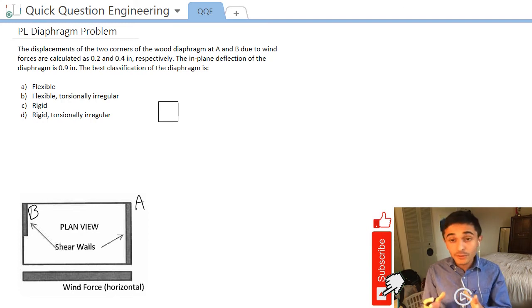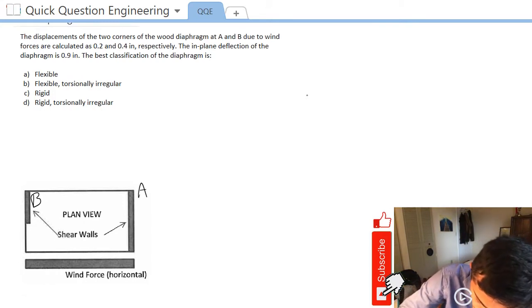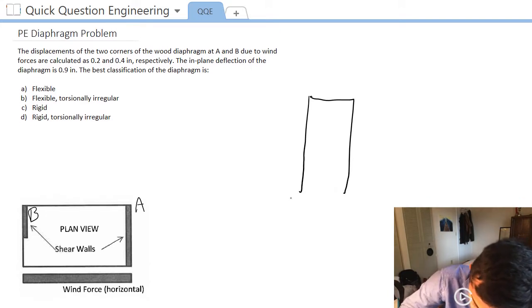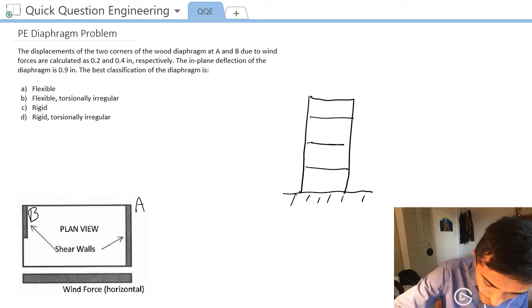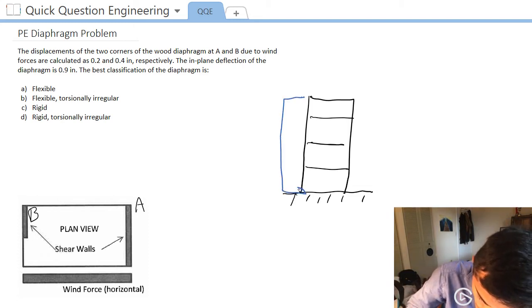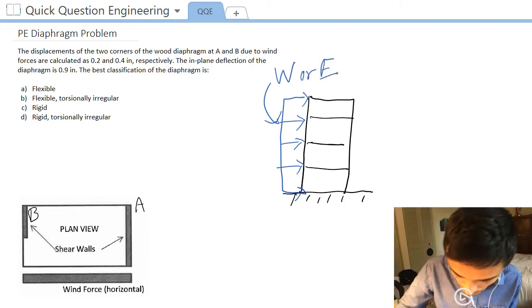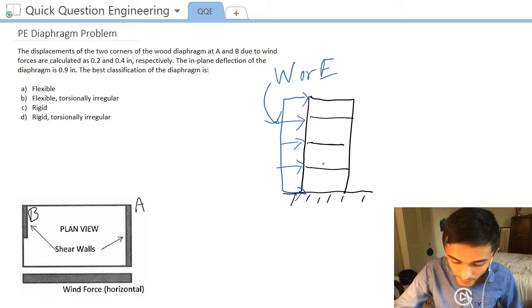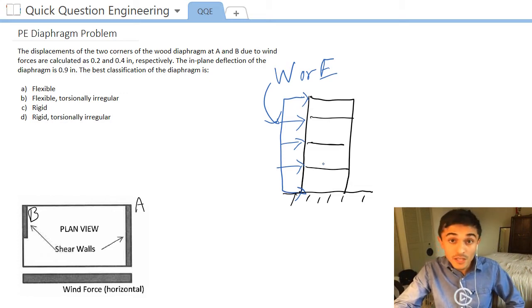So before we even get to our problem let's understand what a diaphragm is. If we have a building, whether it's in a seismic zone or not, this building, let's say you have foundation and then we have many floors here. This building will be subjected to wind loads or earthquake loads, some sort of lateral load. Let's say that this load is wind or seismic. And a diaphragm is just the floors of the building and the floors are called diaphragms when they transfer these lateral loads into the main wind force resisting system of the building.